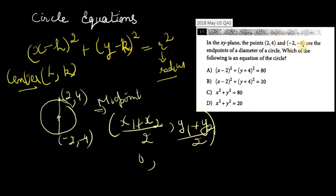So 4 plus a negative 4 is also going to be 0, and once again 0 divided by 2 is 0. So our center is (0, 0).